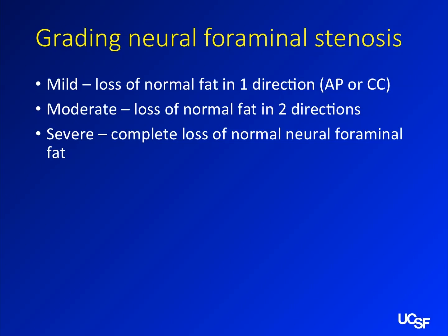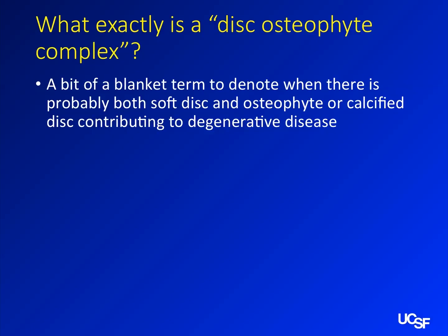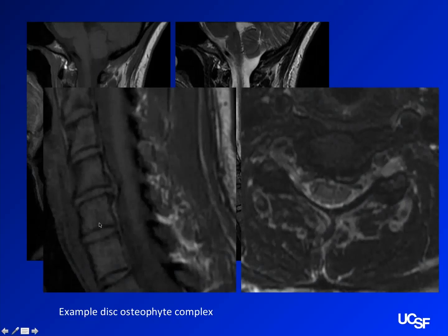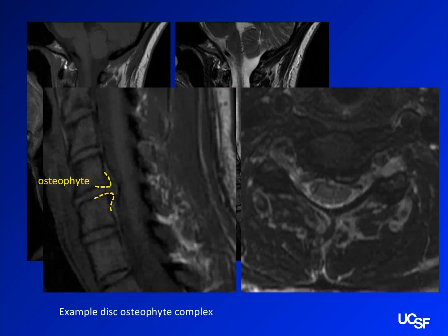Disc osteophyte complex — what the heck is that? People use that term, some more than others. It refers to a combination of a disc and a calcified osteophyte. Here's an example with degenerative disease in the cervical spine — you've got a disc coming out, and if you zoom in, you can see there's actually new bone forming around it. Discs tend to be smooth, but once you get bone formation there, you get this lumpy bumpy appearance. That's when I'd use the term disc osteophyte complex.